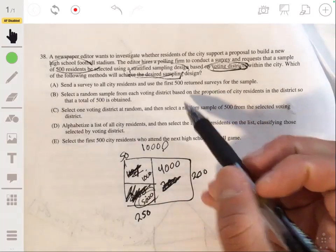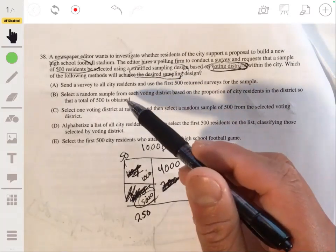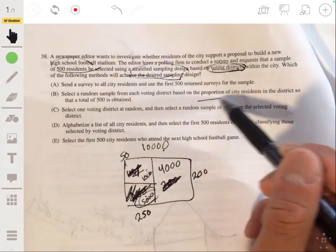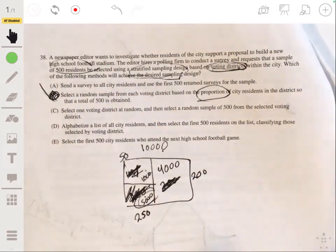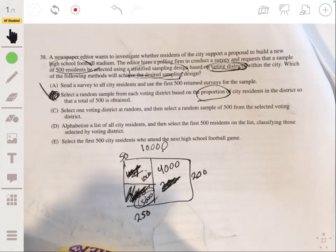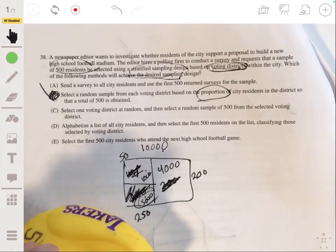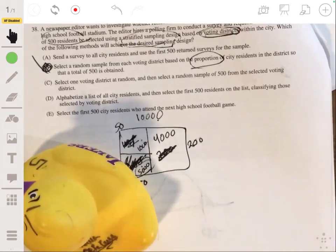So then you would have your answer be B, because we're talking about proportion. B will be your answer. All right, so there you go. I hope that helps. Let me know if you have any questions or requests or anything you want me to go over. And please subscribe.